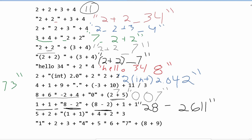Next, we have 5+2 which is 7. Then now we have a string, so we have to add quotes around it. Then we have the combination of (1+1), and then 4 + 2*3 which is 6. So we're going to have 46.